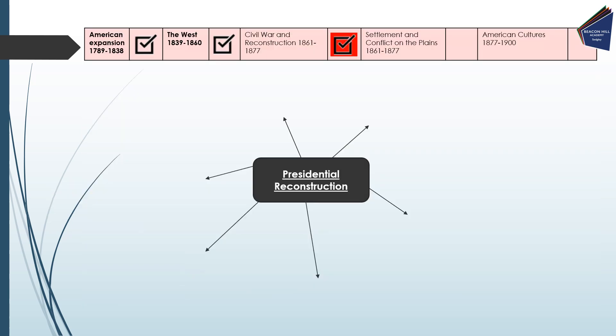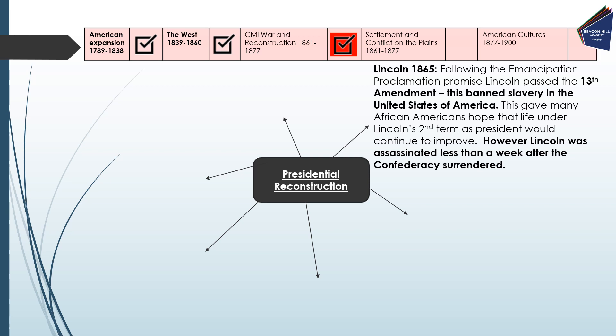Lincoln in 1865 followed his promise of the Emancipation Proclamation by issuing the 13th Amendment, which banned slavery in the United States of America. It was a huge turning point and gave many African-Americans hope that life under Lincoln's second term would continue to improve. However, Lincoln was assassinated less than a week after the Confederacy surrendered, and as a result we see Andrew Johnson — the next president — make lots of negative changes affecting African-Americans.